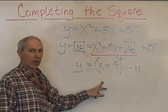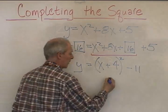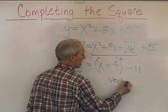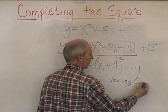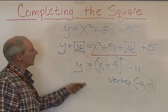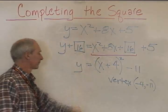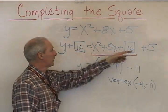We now have vertex form for this parabola, which was expressed in standard form. The vertex here is opposite sign, negative 4, same sign, negative 11. That's the vertex for this parabola expressed here in standard form. We only got there by completing the square.